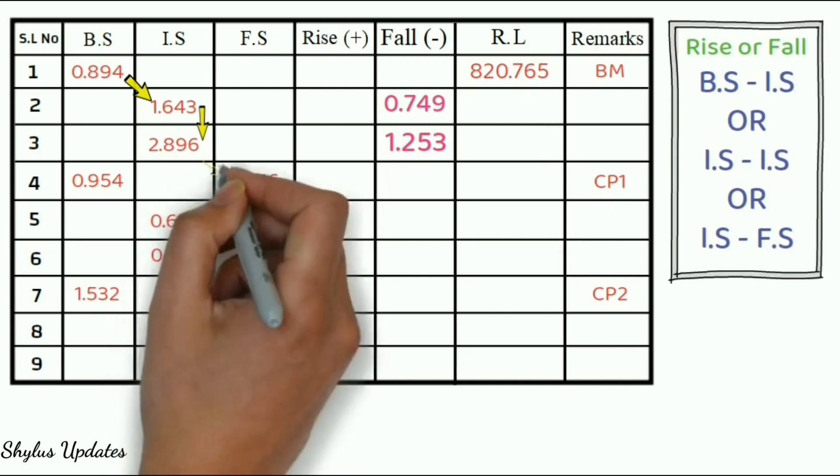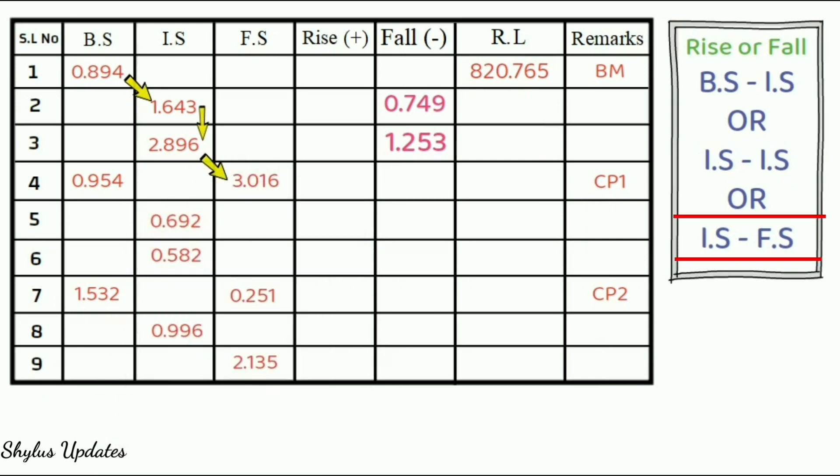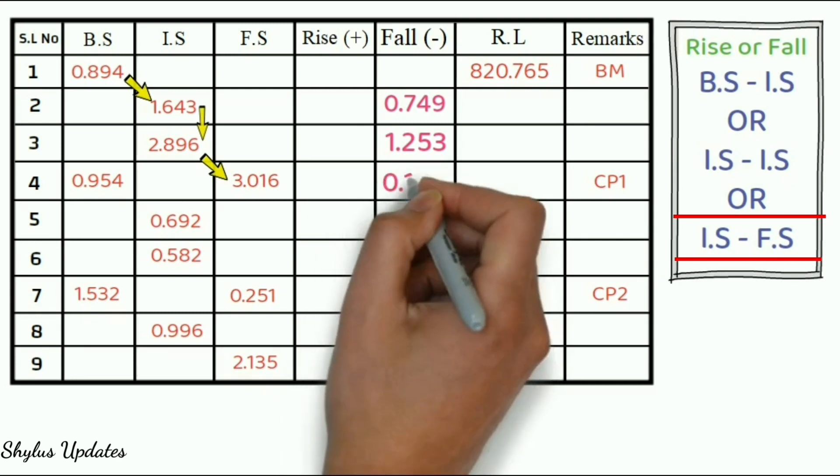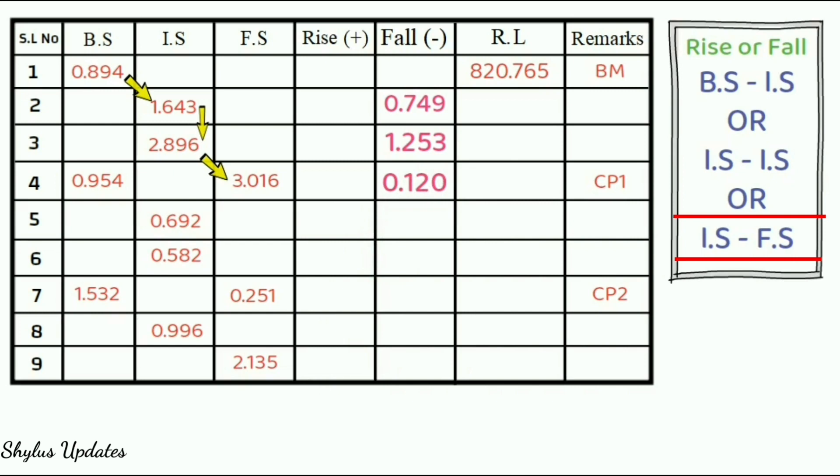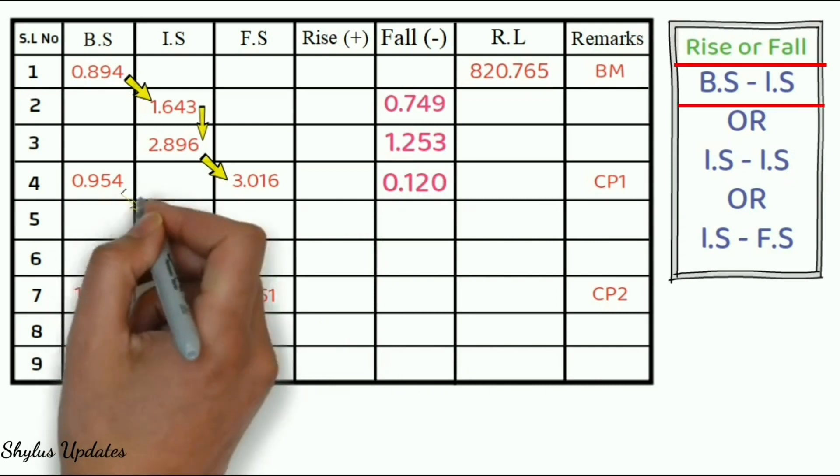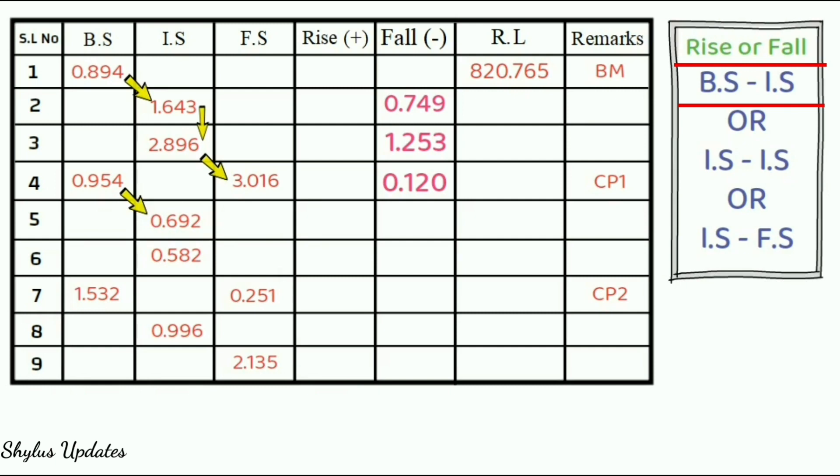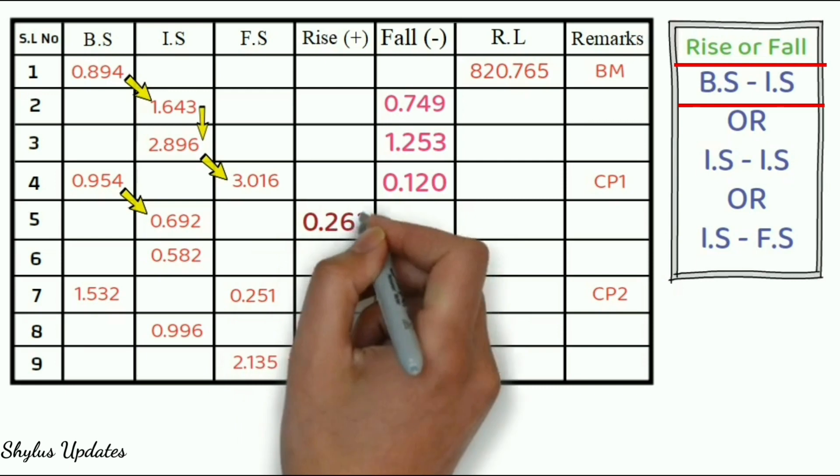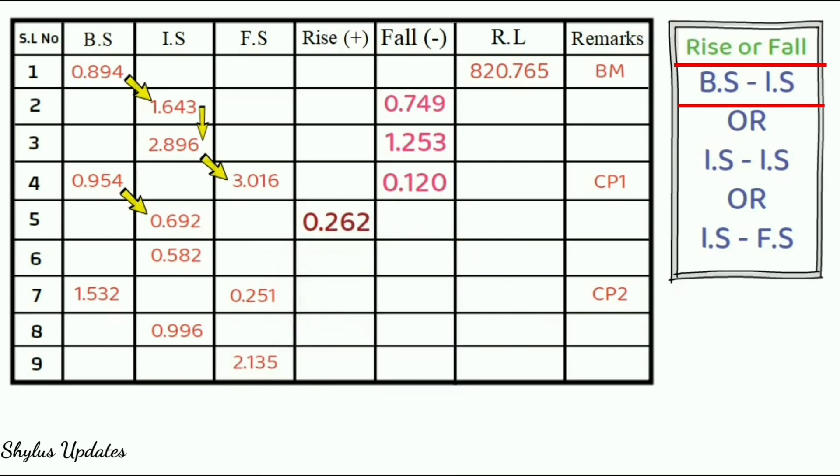Next, use third formula IS minus FS. Subtract 2.896 minus 3.016. You will get minus 0.120, which is negative. So, enter in fall column. Similarly, use again BS minus IS formula. Subtract 0.954 minus 0.692. You will get 0.262, which is positive. So, enter in rise column.